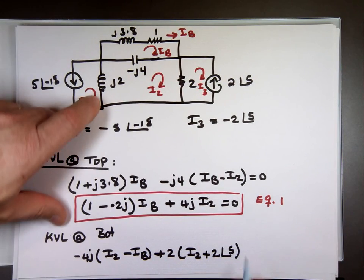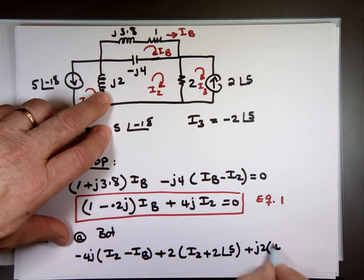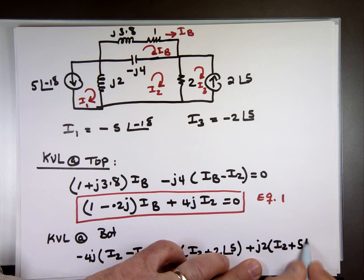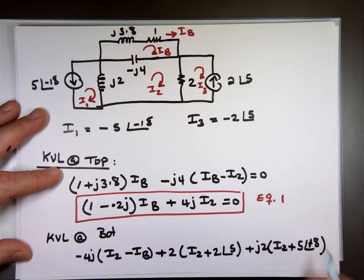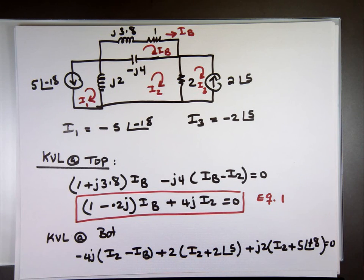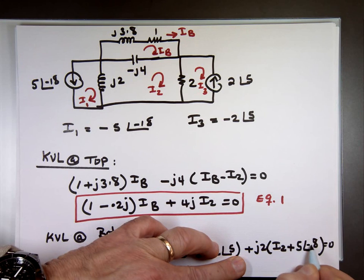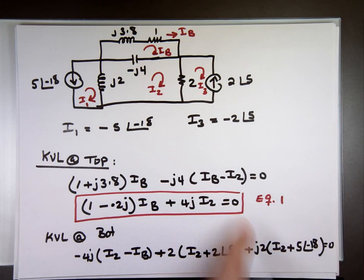Keep going. Going this way. J2, the current up, which is I sub 2 minus I sub 1. What's I sub 1? It's that number that becomes a plus 5 angle 18. Equals zero. That's 18. Looks like a plus, but 18. Oh no. Negative 18, right? How's that? Negative 18. Yes. I know it looked like a plus before. And now we're just going to clean that equation. I have one equation. Once I clean that, there's my second equation. Two equations by two unknowns. I'm ready to go.